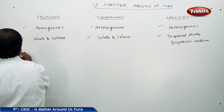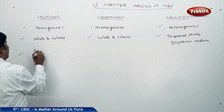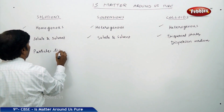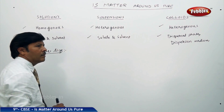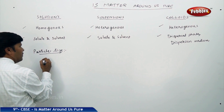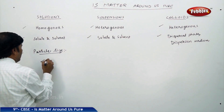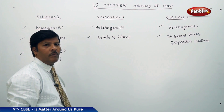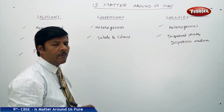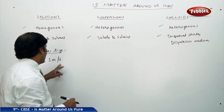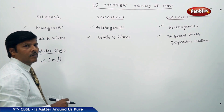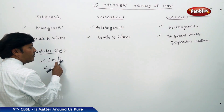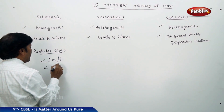Particle size plays a very important role. In true solutions, particle size is less than 1 millimicron. Here, 'm' is milli and 'μ' (mu) is for micron, meaning the particle size is very very small — it is less than 1 millimicron, which is 10⁻³ × 10⁻⁶ = 10⁻⁹ meters.